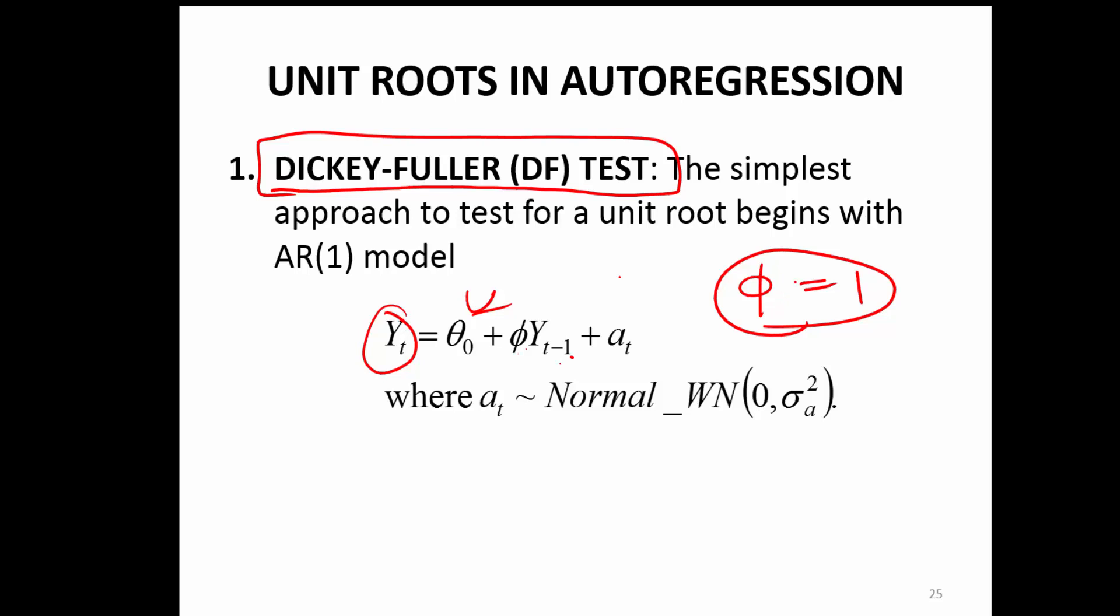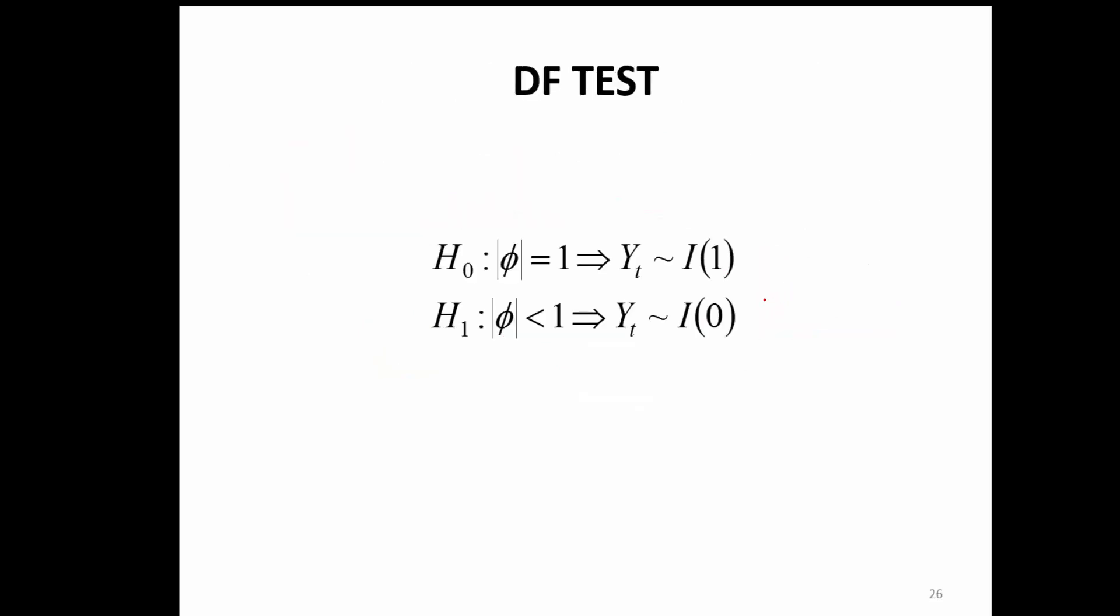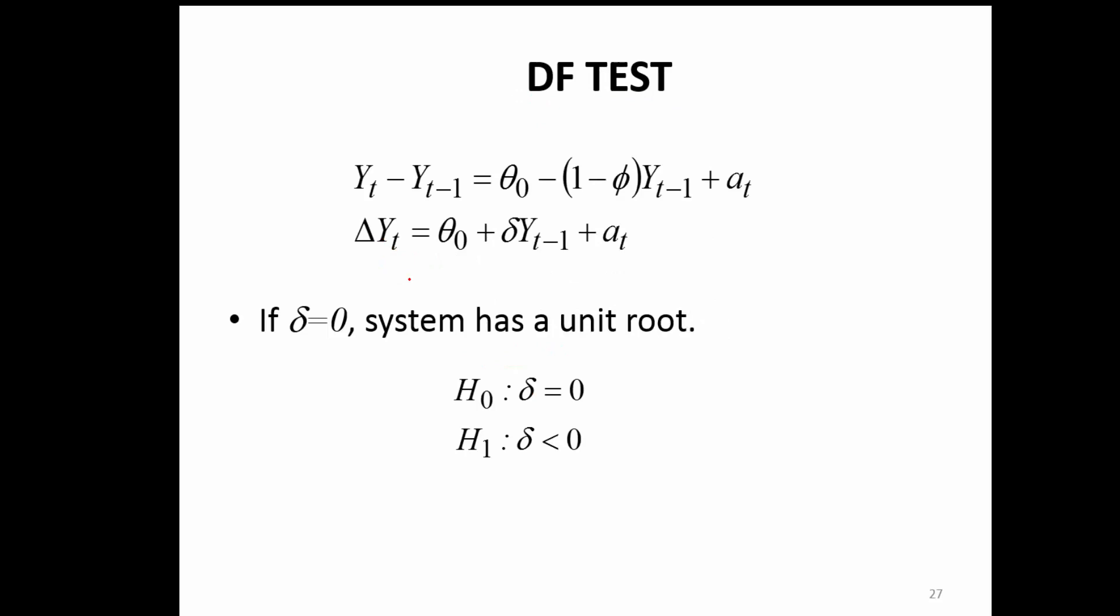The hypothesis testing in the case of a Dickey-Fuller test is like this: the modulus of phi is either 1, or modulus of phi is less than 1, which is the alternative hypothesis. Either this will get accepted or we reject the null hypothesis, depending on what the test statistic value is.